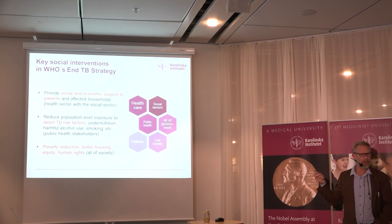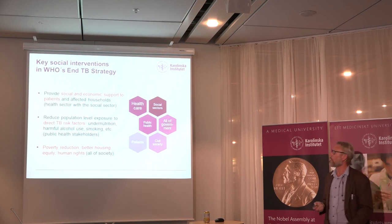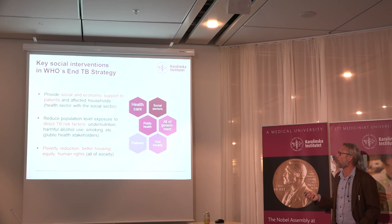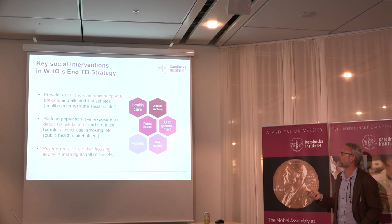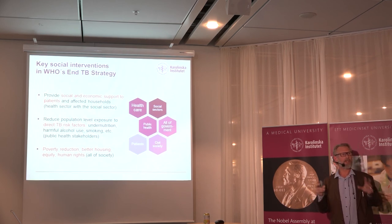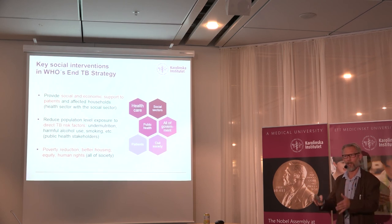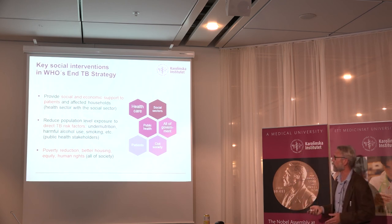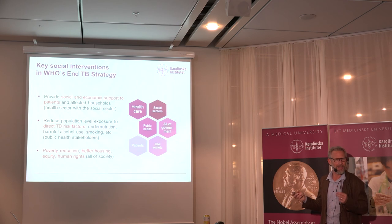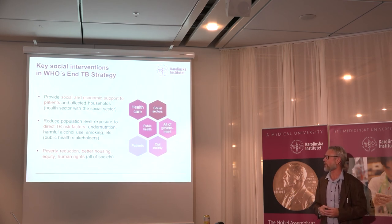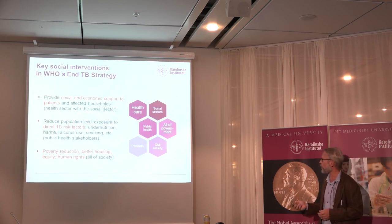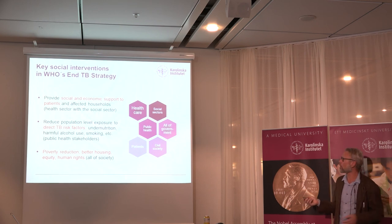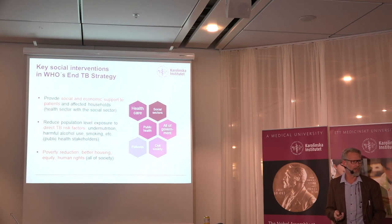Social interventions are important, and the WHO strategy mentions what's required — partly for the health sector but largely outside it. First is social and economic support to people who are sick or disabled: sickness insurance, collaboration between health and social sectors. Second is reducing those direct risk factors — which are socially determined — through public health strategies targeting either the risk factors themselves or their social determinants. And then the big one: poverty reduction, better housing, equity, human rights — the SDG agenda, well beyond the health sector. The partners needed are: the health sector, the social sector, public health stakeholders, all of government, and beyond government, civil society and patient organizations.